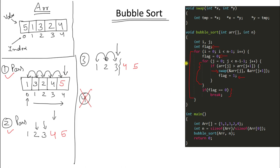Now let's look at the time complexity of bubble sort, which is O(n²). Some parts of the code run in constant time, so we can call those c1. The important section — inside the nested loops — we can call c2. The number of times this executes follows an arithmetic progression because the inner loop runs n minus i minus 1 times and i is constantly changing.